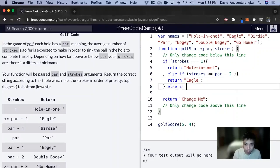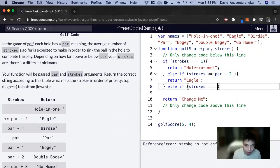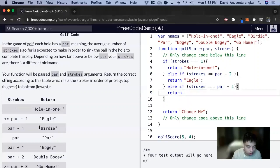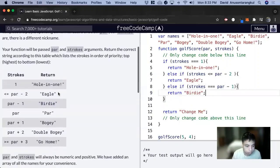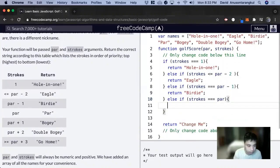Else if strokes is equal to par minus one, we return Birdie. Else if strokes is equal to par, we return Par.